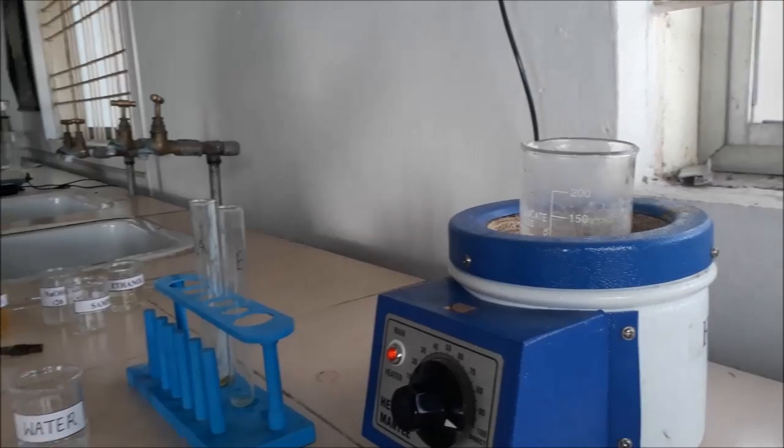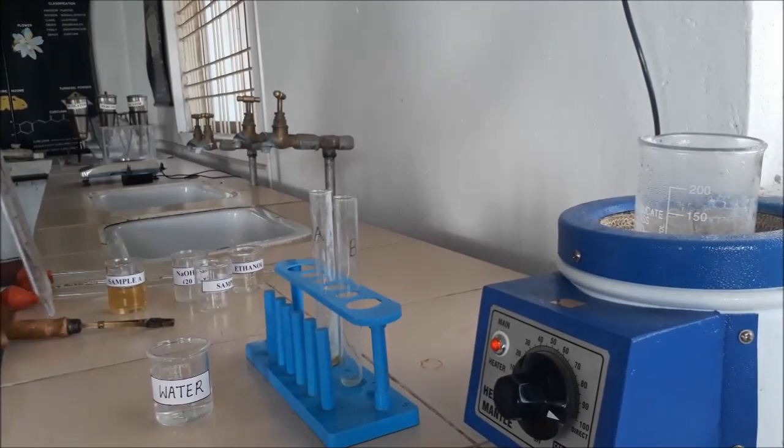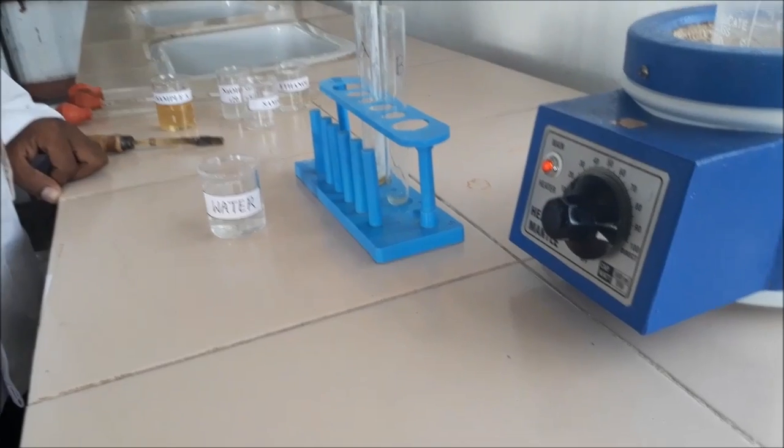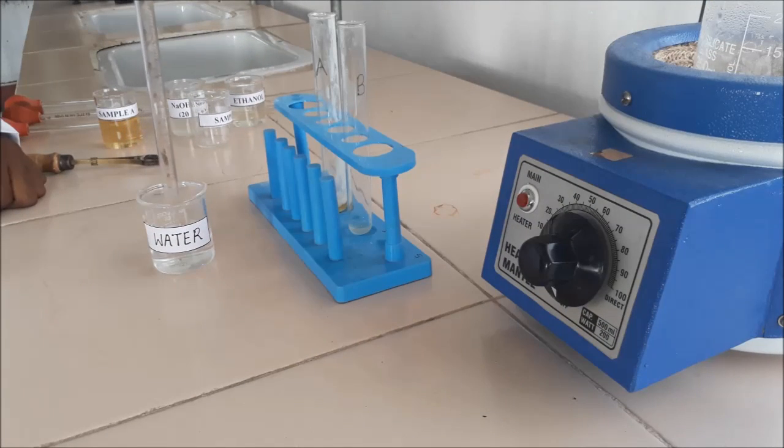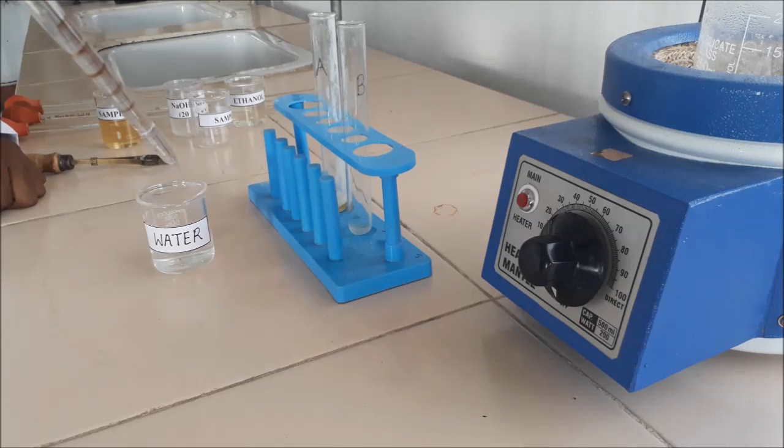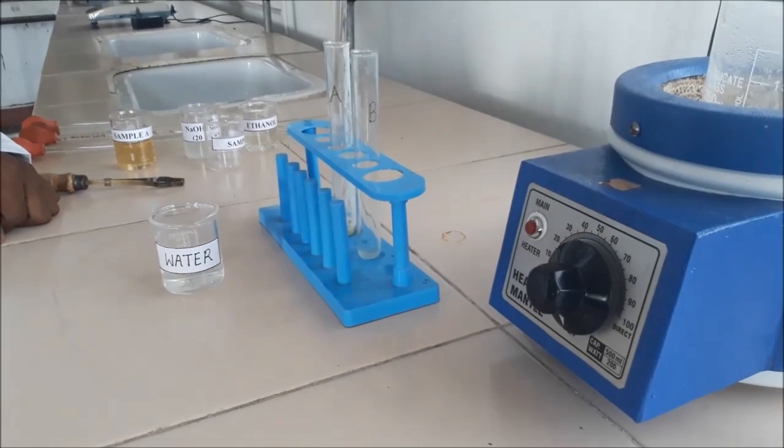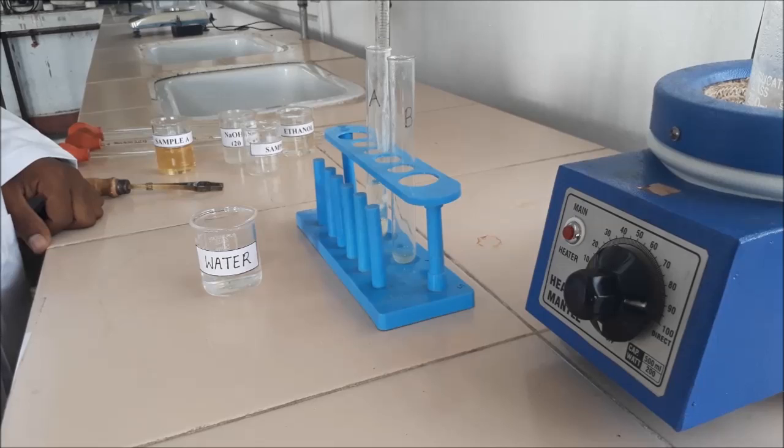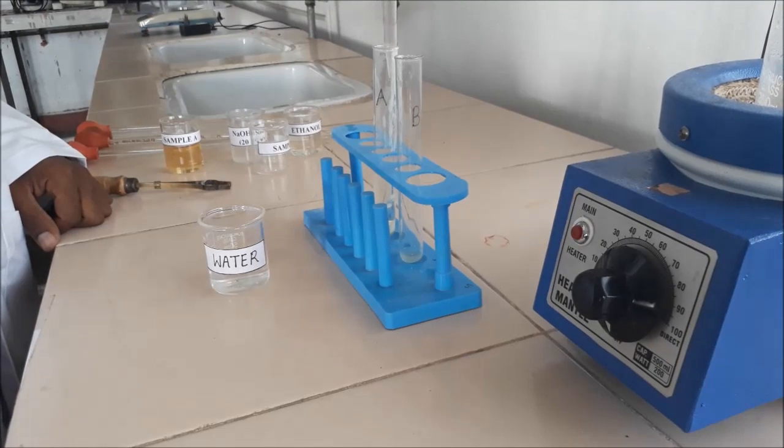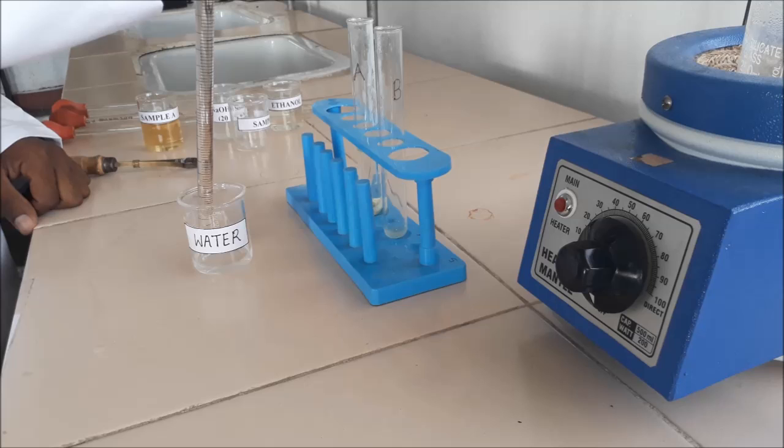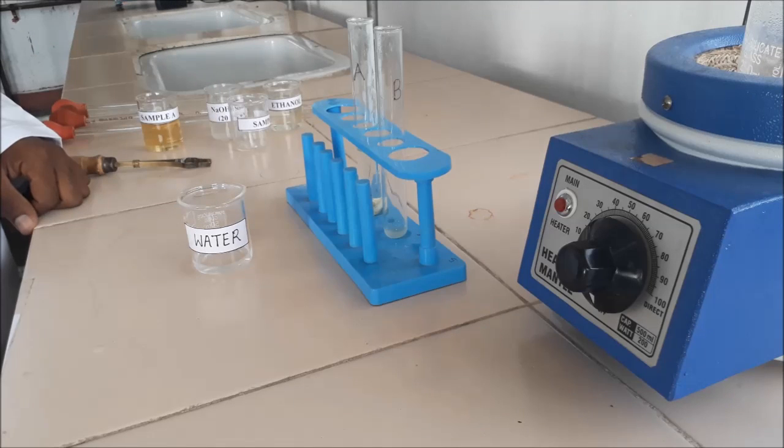Then add 5 ml of distilled water to each test tube by using pipette. Pipette out 5 ml of distilled water and then transfer into test tube B. Again pipette out the same quantity that is 5 ml of distilled water and then transfer into test tube B.